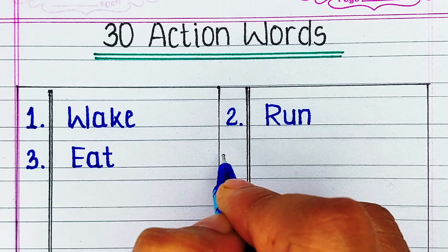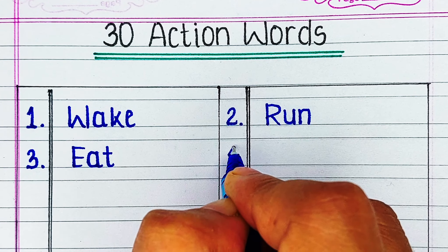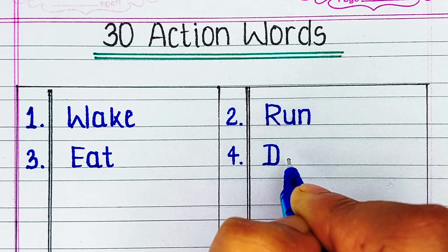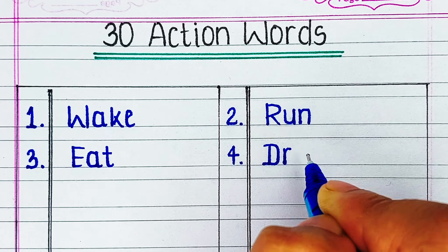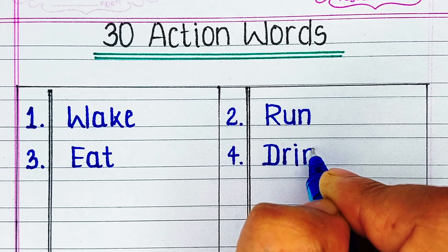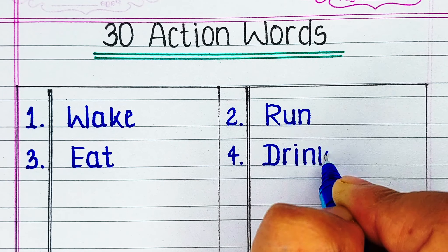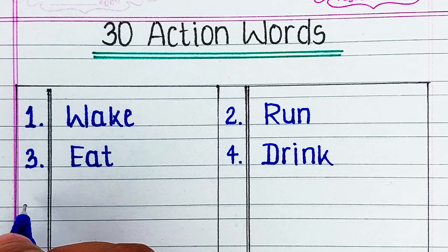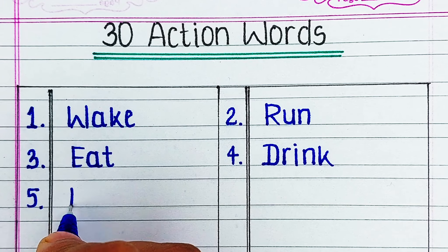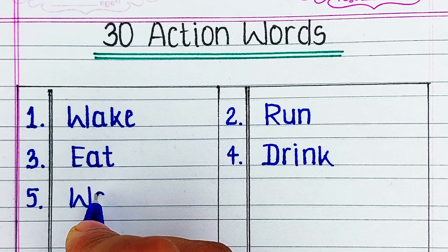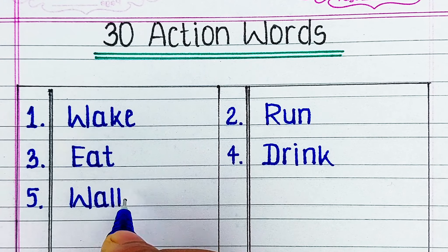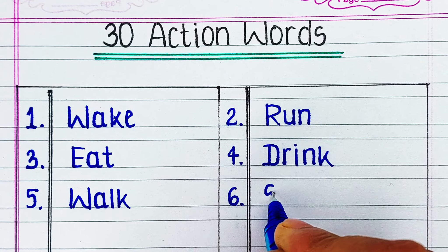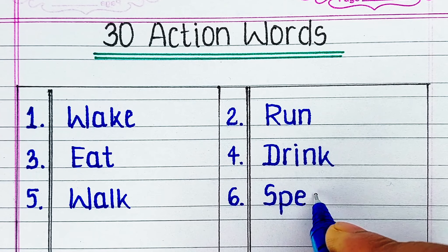Next word is R-U-N, run. Third word is E-A-T, eat. Next word is D-R-I-N-K, drink. Next word is W-A-L-K, walk.